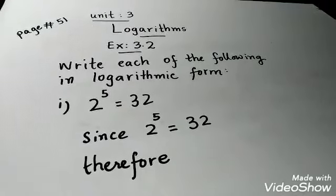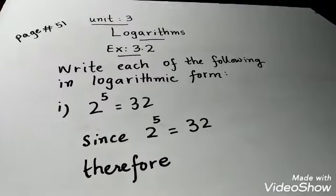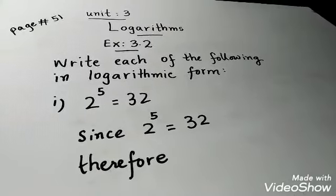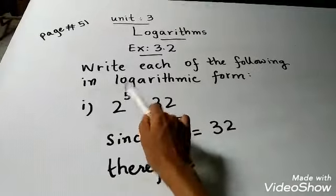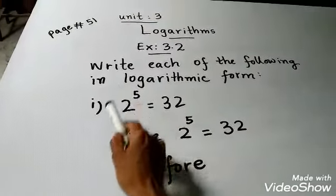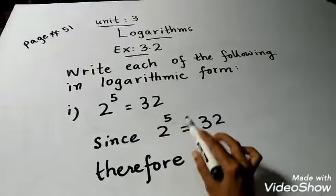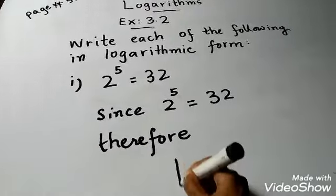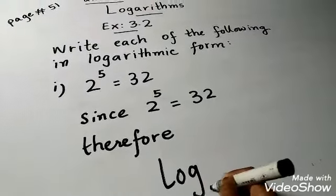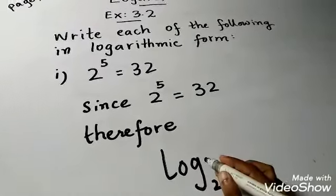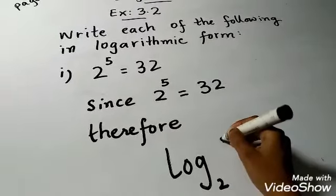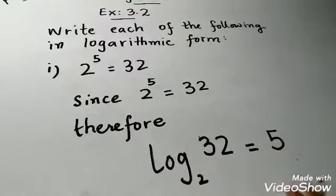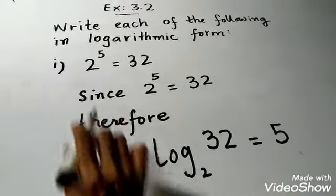In this video, if we have a question and we convert it to logarithmic form — for example, if you have a question given in exponential form such as 2 exponent 5 is equal to 32, and you convert it to logarithmic form — since 2 exponent 5 is equal to 32, you will write log base 2 of 32 is equal to 5. So you have converted it to logarithmic form.